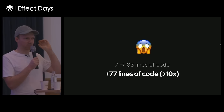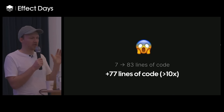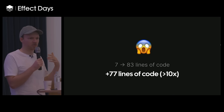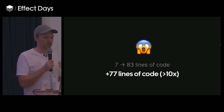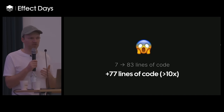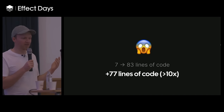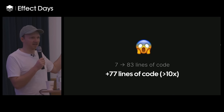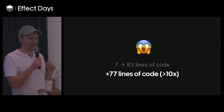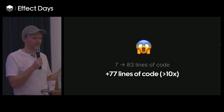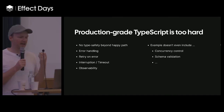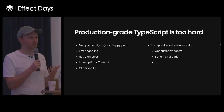So in this simple example we went from seven lines of code that were really easy to understand to over 80 lines of code — a 10x increase just to go from the happy path to making it more production-grade. I'm sure not many people go through such a great extent; they rather keep it at the seven lines of code, and then things blow up in production. I was really thinking about that — why is it so hard in TypeScript to build production-grade software?